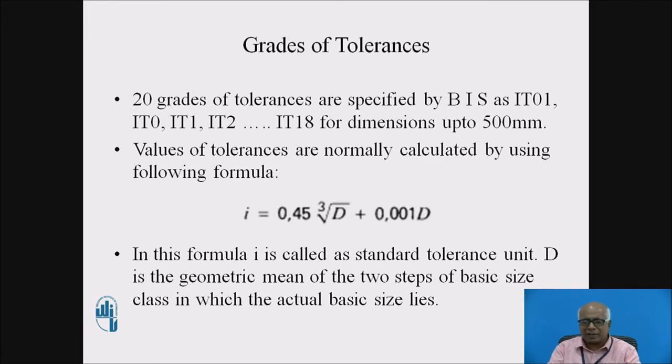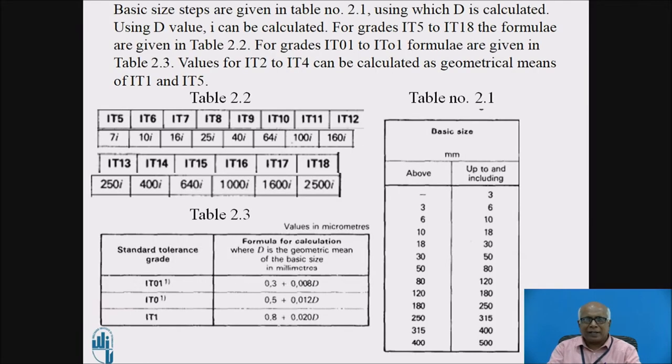Let us try to understand what we mean by this. These are the basic size classes. Table 2.1 shows first is 0 to 3 mm, 3 to 6 mm, 6 to 10 mm. Likewise, the sizes are classified in steps. Now the actual basic size determines in which class it lies. For example, if it is having a diameter of 15 mm, it lies between 10 to 18, this class.